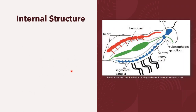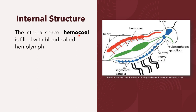Arthropods are coelomates with a true coelom or body cavity. However, in arthropods, the coelom is reduced to a small compartment. The internal space of the arthropod is composed of a body cavity known as the hemocele, which is filled with blood called the hemolymph. The hemolymph is defined as the fluid analogous to the blood in invertebrates that circulates in the interior of the arthropod's body, which is why the hemolymph is also known as the arthropod's blood.